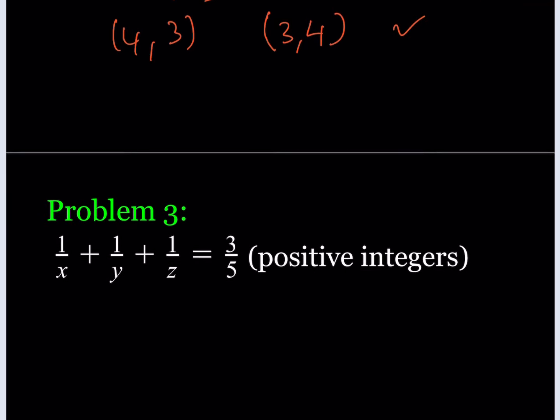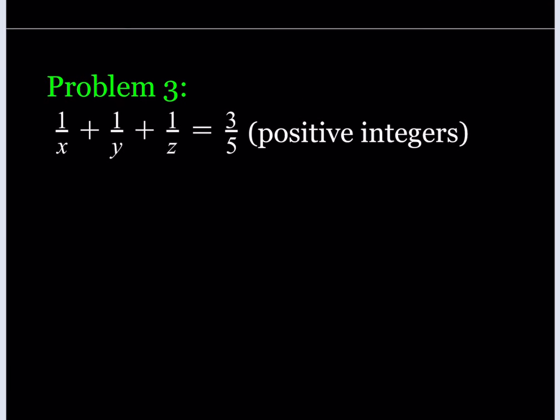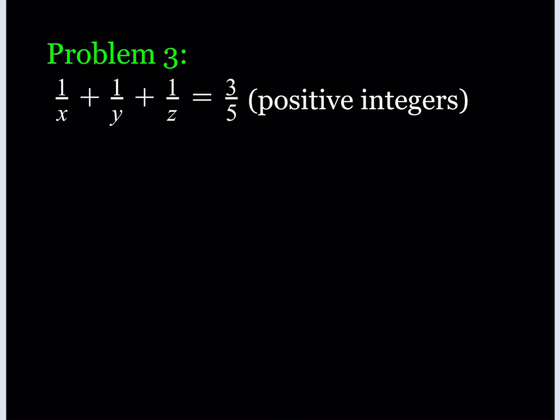Let's proceed to the third problem. Problem 3 is a rational Diophantine equation. These types are not very easy to solve, and some of them don't even have solutions — or we don't know if they do.